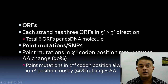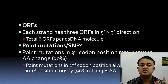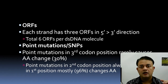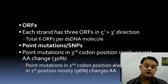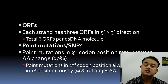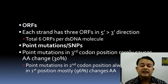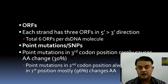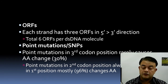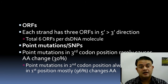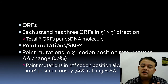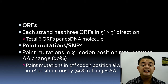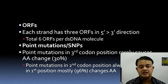Point mutations (SNPs — single nucleotide polymorphisms) are substitutions at one position, from one base to another. Within a triplet codon, the third position rarely causes a change in amino acid — mutations that change the amino acid are called non-synonymous, and those that don't are called synonymous (silent) mutations.